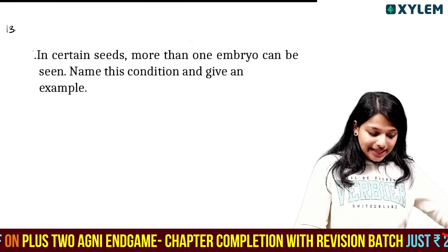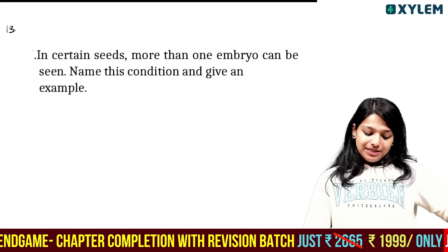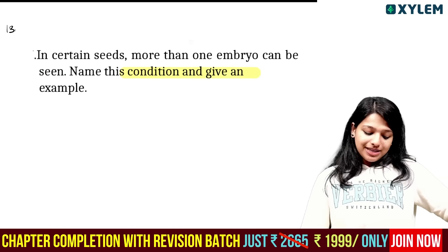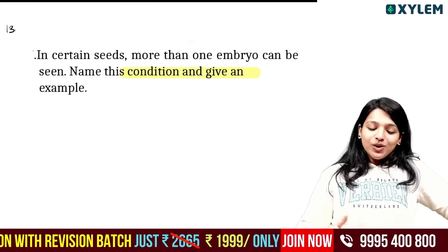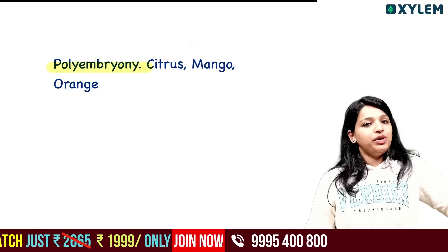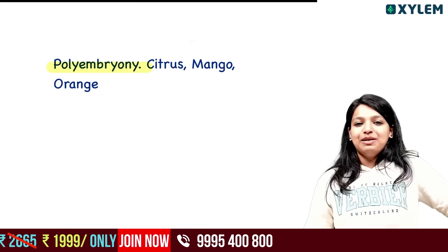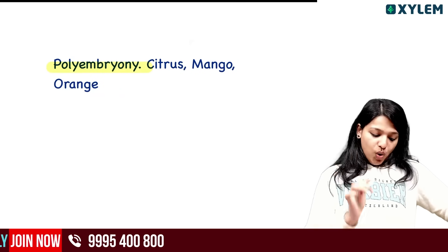In certain seeds, more than one embryo can be seen. Name this condition and give an example. This condition is called polyembryony. Examples include citrus, mango, and orange.